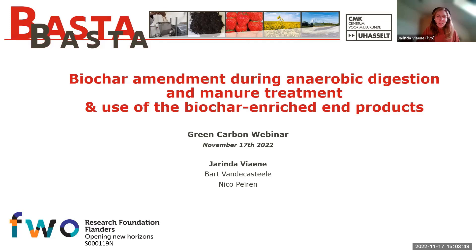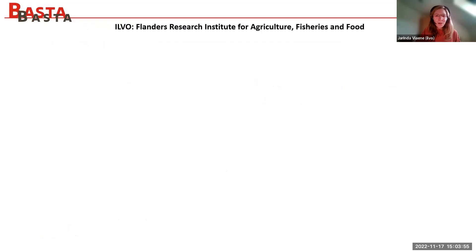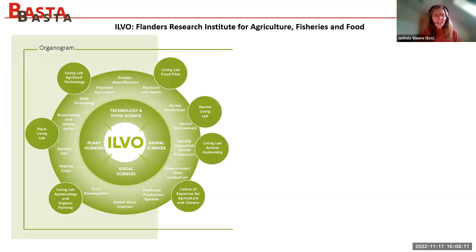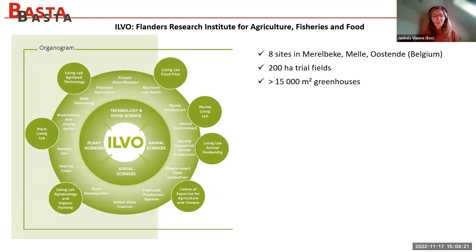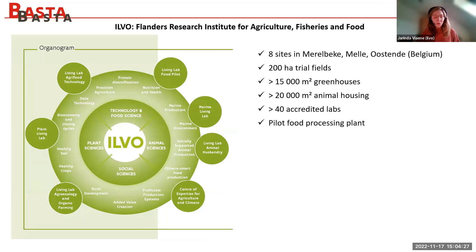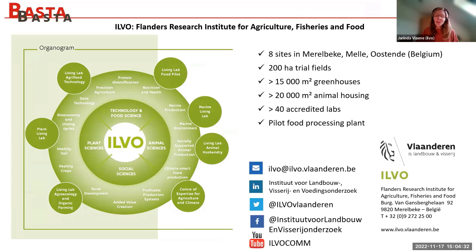I want to first present myself and the organization where I work. I work for ILVO, located in Belgium — it's the Flanders Research Institute for Agriculture, Fisheries and Food. Here you see an overview of all the different topics we are investigating. It's very diverse, and we have a big infrastructure with 200 hectares of fields, greenhouses, animal housing, labs, and a food pilot processing plant.